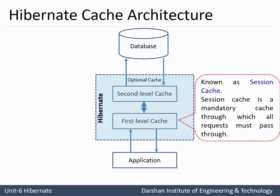The second level cache is also known as session factory level cache. As we studied in Hibernate architecture, the session object is used for initializing transactions, and the session factory object is defined once per database. The second level cache, being session factory level, can store the whole application within it. If the application requires any object and it is not present in the first level cache, that object will be present in the second level cache, reducing database hits and improving overall performance.